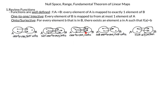Another function has four elements of B, each with exactly one element of A mapped to it, so it is one-to-one. In another example with two elements of B, one has zero elements from A (acceptable) but the other has two elements of A mapped to it, so it is not one-to-one.